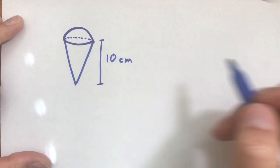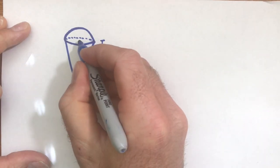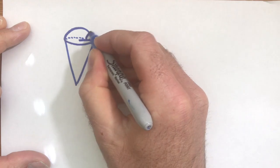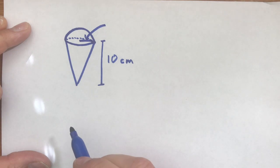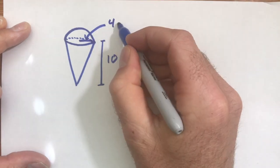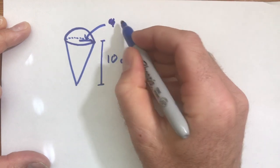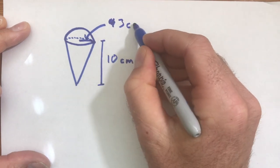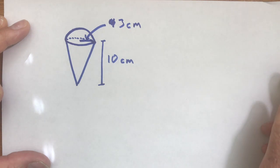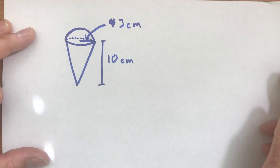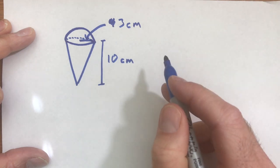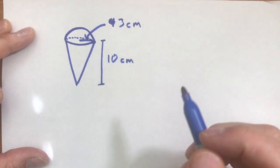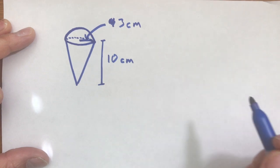And then we'll say the radius of the cone, which happens to also be the radius of the sphere, we'll say is 3 centimeters. This, believe it or not, is all the information we'll need. We don't really need the height of the sphere because the sphere just has one dimension, it's the radius or one measurement.